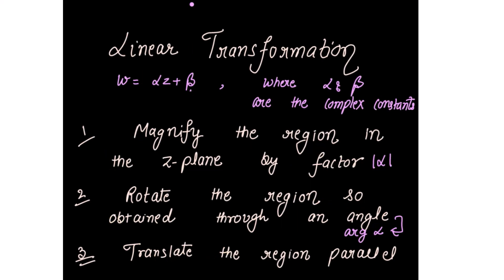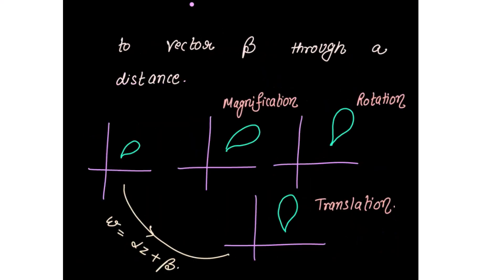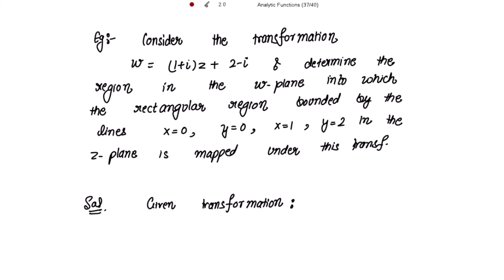And third, translate the region parallel to vector β through a distance |β|. So the region in the z-plane is magnified, then rotated, then translated — that is the linear transformation w = αz + β where α and β are complex constants. Let's consider an example: consider the transformation w = (1 + i)z + (2 - i).